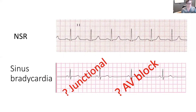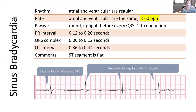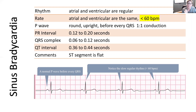Could this be junctional? Could this be a block? We have to do all of our assessment to make sure. When we look at sinus bradycardia's waveforms, everything is normal except the rate. Atrial and ventricular rhythm will be normal and predictable. The rate for atrial and ventricular will be the same but both less than 60. The P wave is round and upright, there's one for every QRS, and then there's a T wave. All intervals will be normal and the ST segment will be flat.